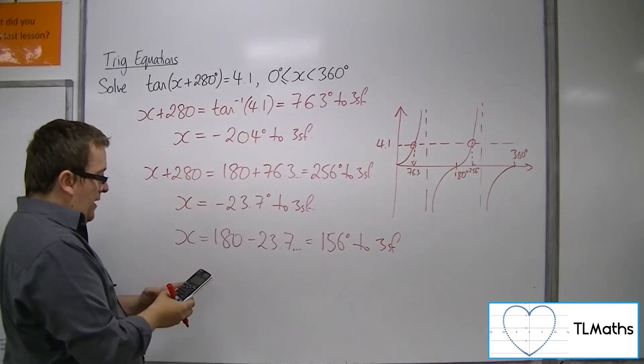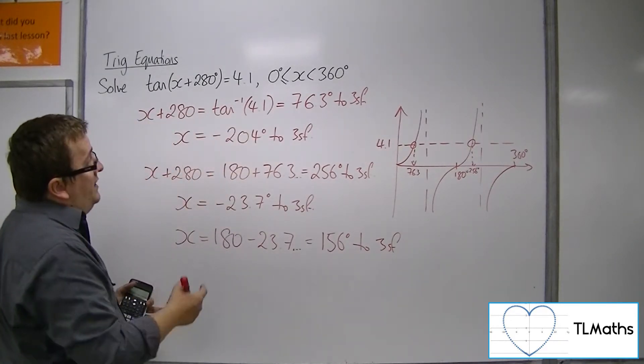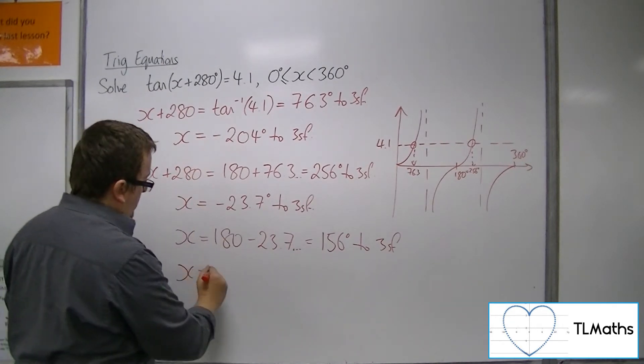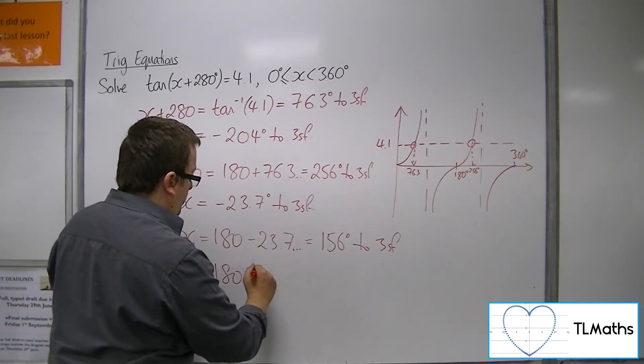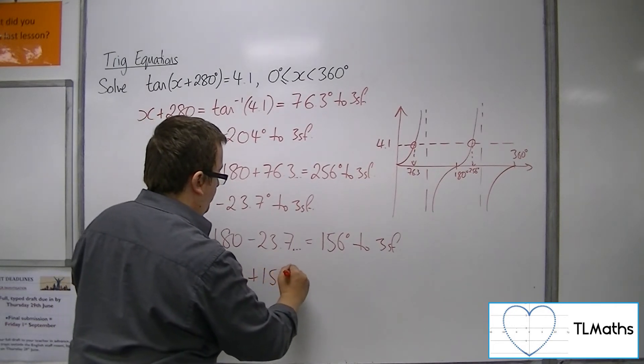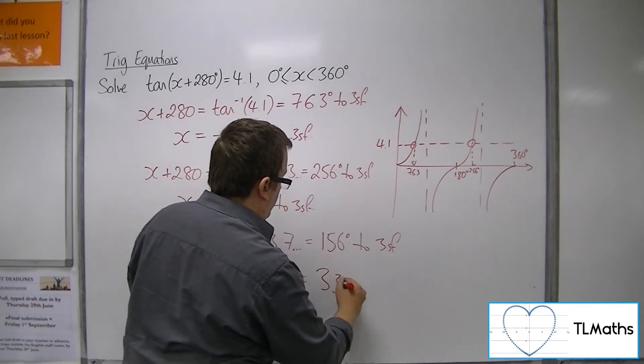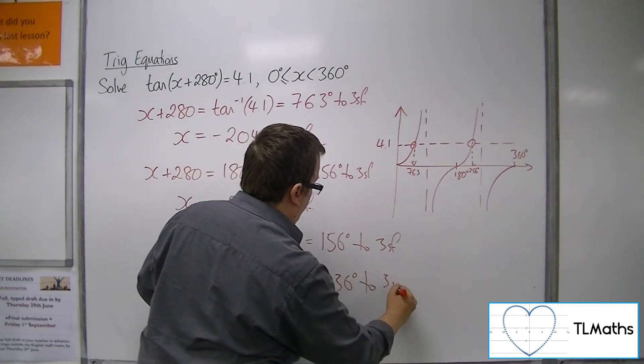Now, if I add on another 180, I still am within my 0 to 360, and so this must also be a solution. So, that gets me 336 degrees to 3 sig fig.